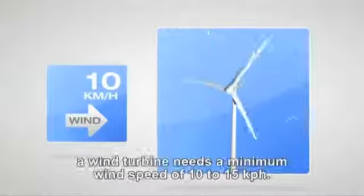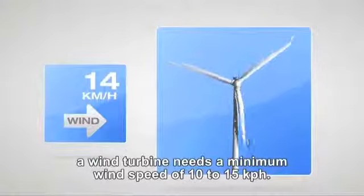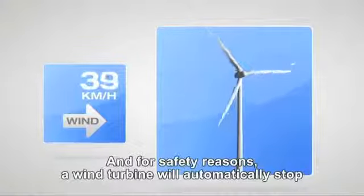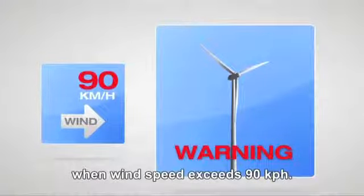In order to function, a wind turbine needs a minimum wind speed of 10 to 15 kilometers per hour. And for safety reasons, a wind turbine will automatically stop when the wind speed exceeds 90 kilometers per hour.